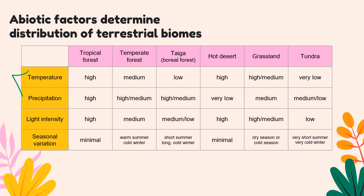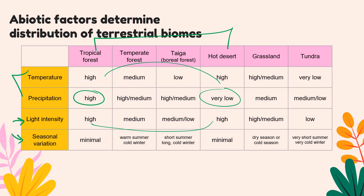Temperature and precipitation are the most influential abiotic factors, but not the only ones. Here I've also added light intensity and seasonal variations. Between tropical rainforest and hot desert, temperature is the same, light intensity is the same, and seasonal variation is minimal — meaning they don't really have seasons. But the difference from very high to very low precipitation takes us from a tropical rainforest to a desert.